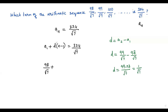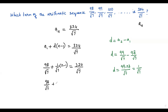Now we plug in d = 1/√7 into the formula: 98/√7 + (1/√7)(n − 1) = 324/√7. Multiplying 1/√7 by (n − 1) gives (n − 1)/√7, so the equation becomes: 98/√7 + (n − 1)/√7 = 324/√7.